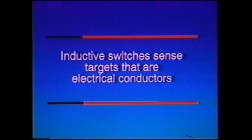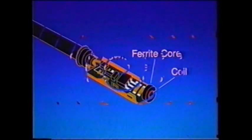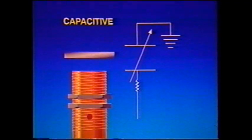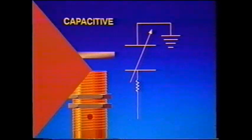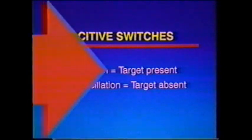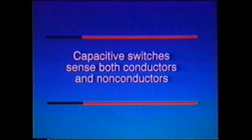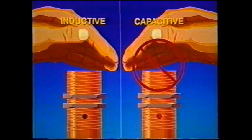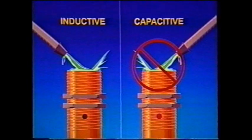A capacitive switch also contains an oscillator, but in this case, the active face of the switch is one plate of a capacitor, and the other plate is ground. When a target enters the active zone, the value of the capacitor changes. When the value of the capacitor is large enough, the circuit begins to oscillate. With a capacitive switch, oscillation occurs when the target is present — exactly the opposite of an inductive switch. Any target which increases capacitance can be sensed, so a capacitive switch can sense both conductors and non-conductors. Never use a capacitive switch when an inductive switch will do the job — you might introduce the chance of a false signal from an operator's hand, cutting fluids, moisture, or dirt buildup.